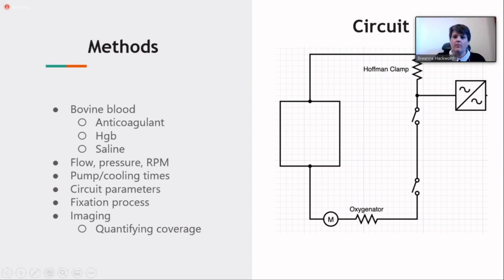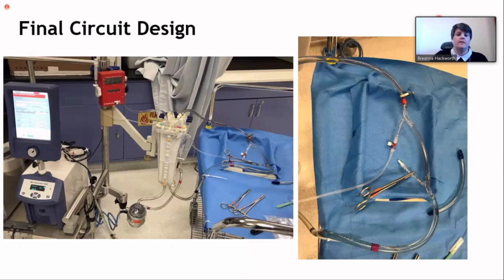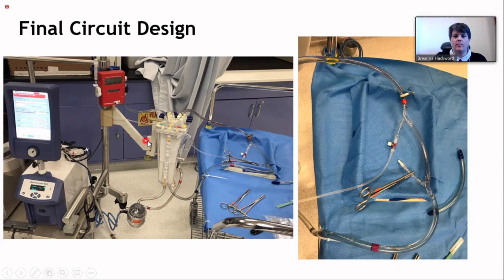We'll talk about the fixation processes and the imaging in just a little bit. Over off to the right-hand side is a little circuit design. Right off to the right-hand side here is where we would take the samples from. We did use a Hoffman clamp to simulate patient pressures as well. This is a photo of our circuit design. Each trial, we did try to keep the height of the reservoir as well as the height of the centrifugal head the same as much as possible, as well as the tubing length. The tubing length did vary a little bit just depending on the pump pack, but we did try our best to keep that uniform throughout.